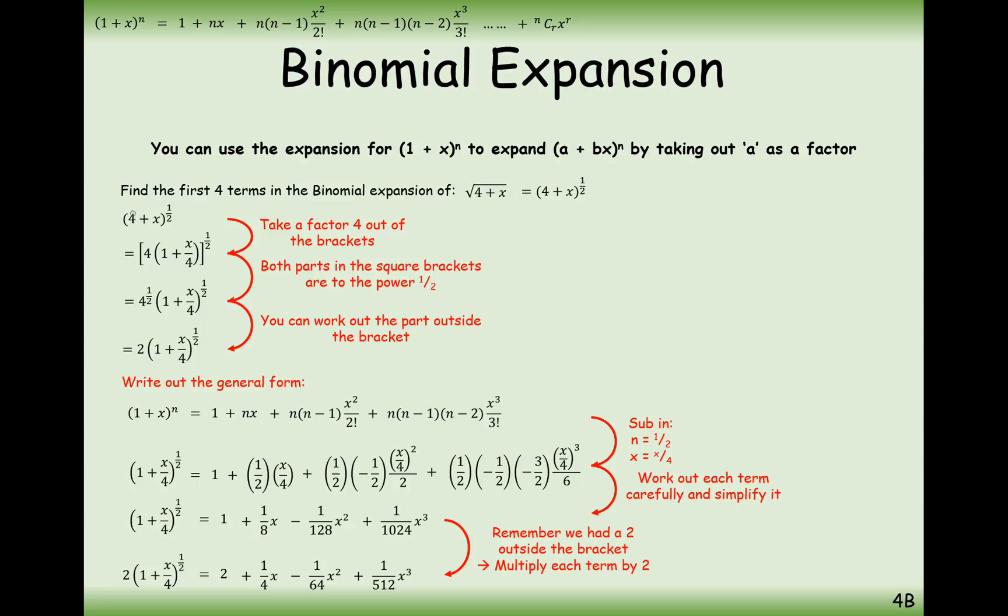So that's how you pull out a factor of a in general out from a bracket. You effectively divide the bracket by that number, then you factorize it out. In terms of what value of x we are allowed, it's usually mod x is less than 1. But in this case, it was x over 4 that we used, so quadrupling both sides we get modulus x is less than 4.